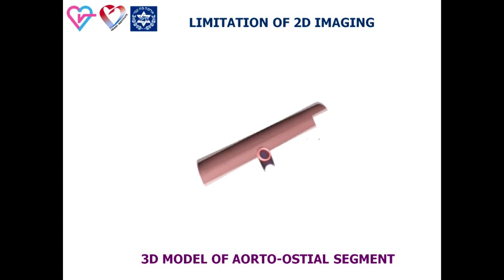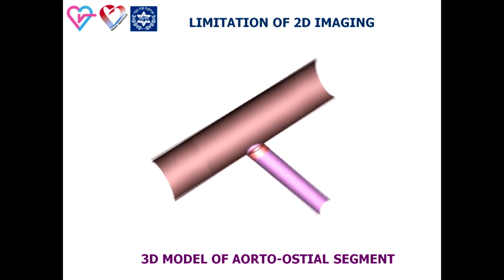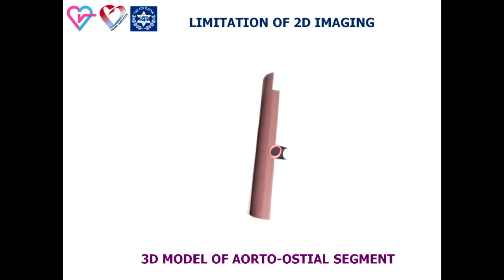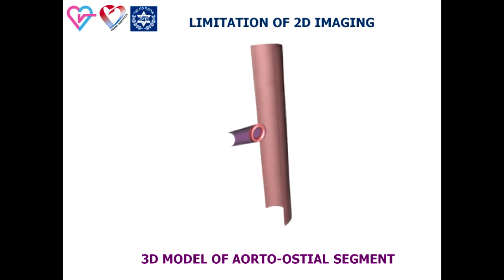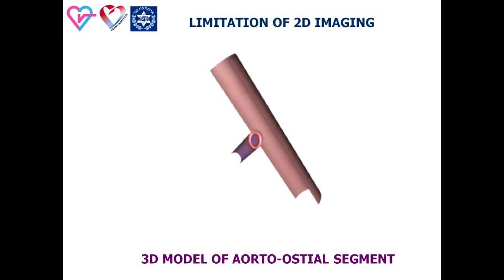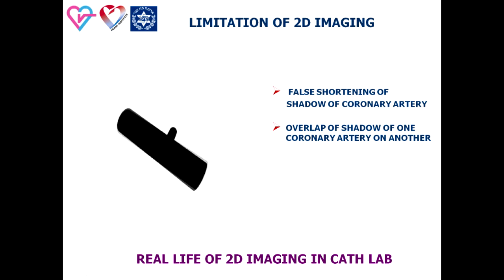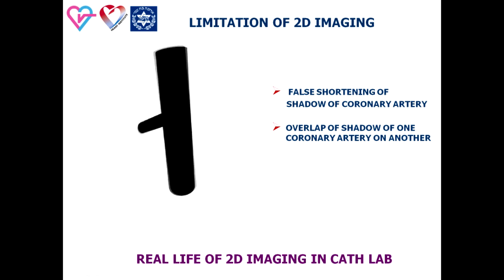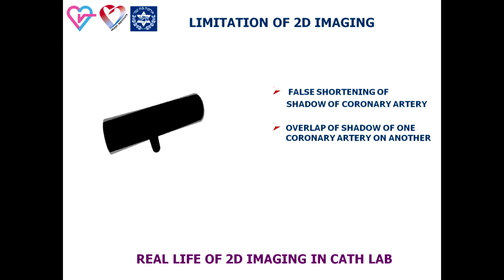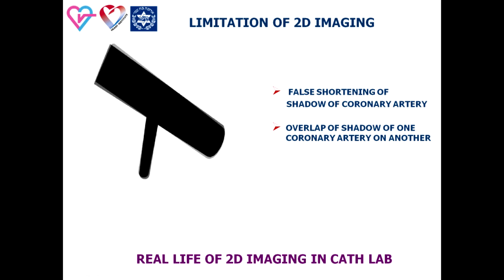This slide presents a 3D model of the left main aorto-ostial segment. 3D imaging and colors help us easily define the ostium of the arising left main artery independently of tube position. But in real life, 2D imaging has well-known limitations: foreshortening of shadows of the coronary arteries and the overlap phenomenon of one coronary artery on another.